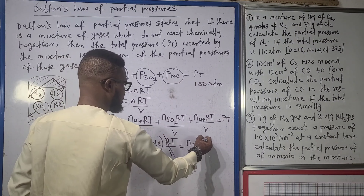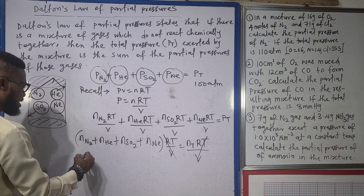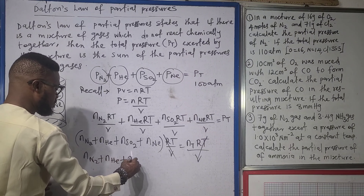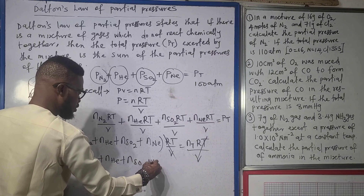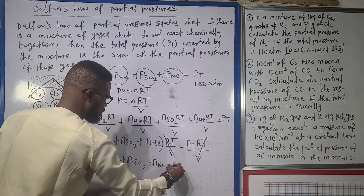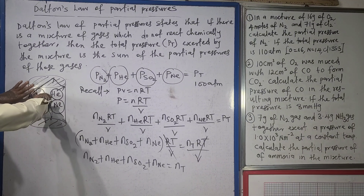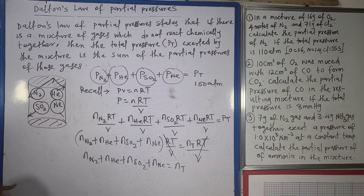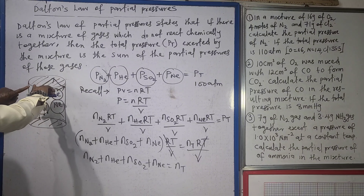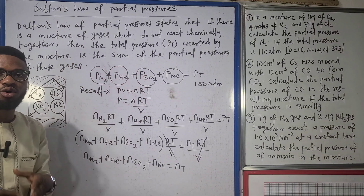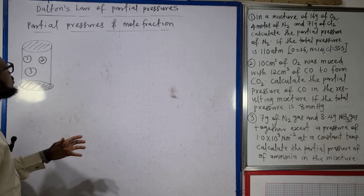So the RT/V cancels out on both sides, meaning the number of moles of nitrogen plus helium plus sulfur dioxide plus neon equals the total number of moles. The important thing is that the total pressure is a function of the number of moles of gas, and the total pressure is the sum of the partial pressures of the individual gases.